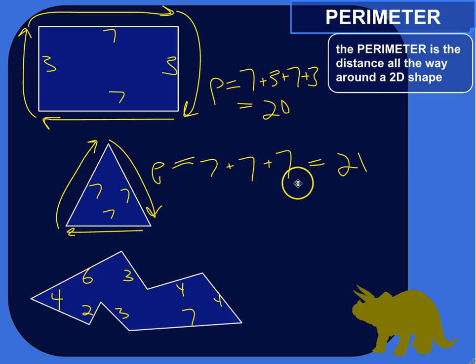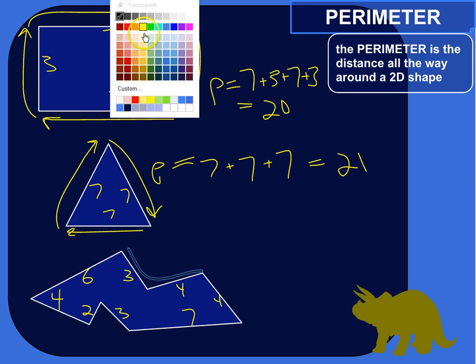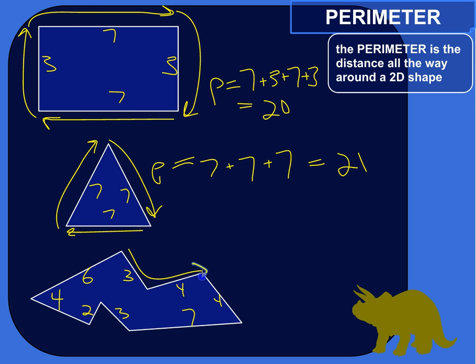The perimeter of this crazy polygon would be 3 plus 4 is 7, plus 4 is 11, plus 7 is 18, plus 3 is 21, plus 2 is 23, plus 4 is 27, plus 6 is 33.